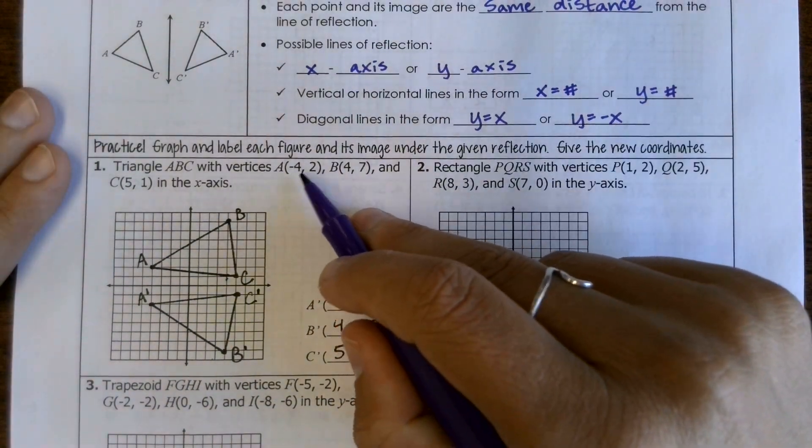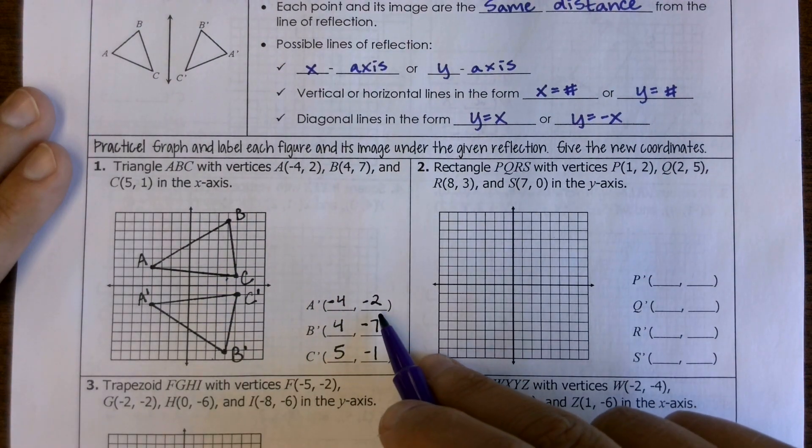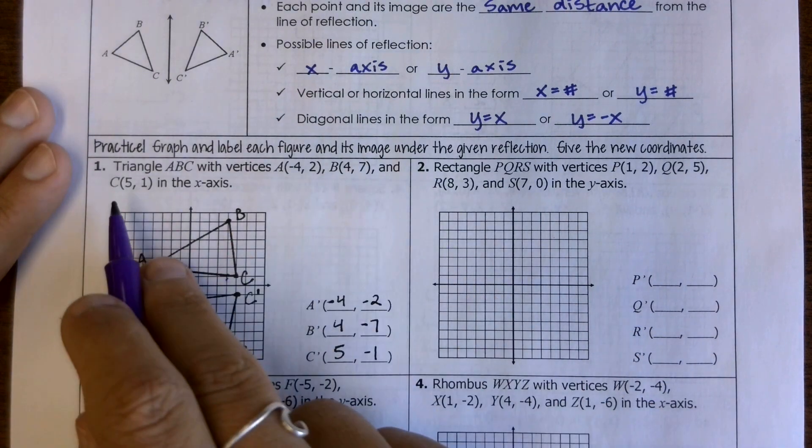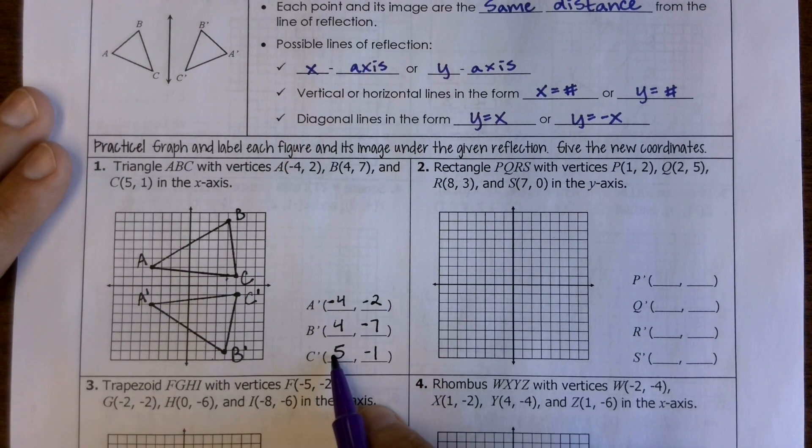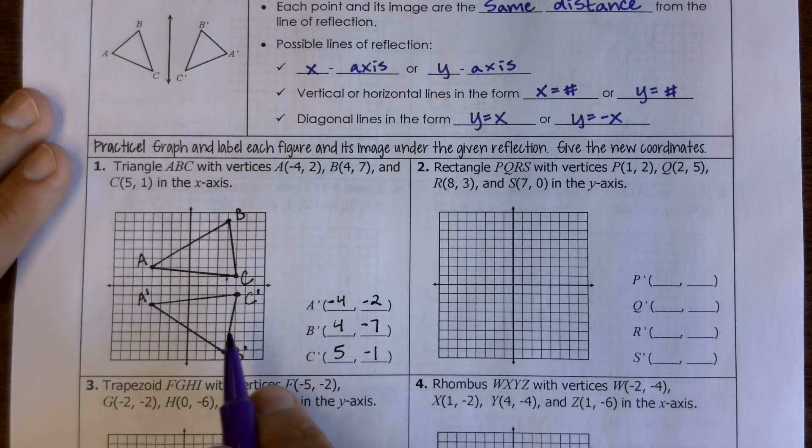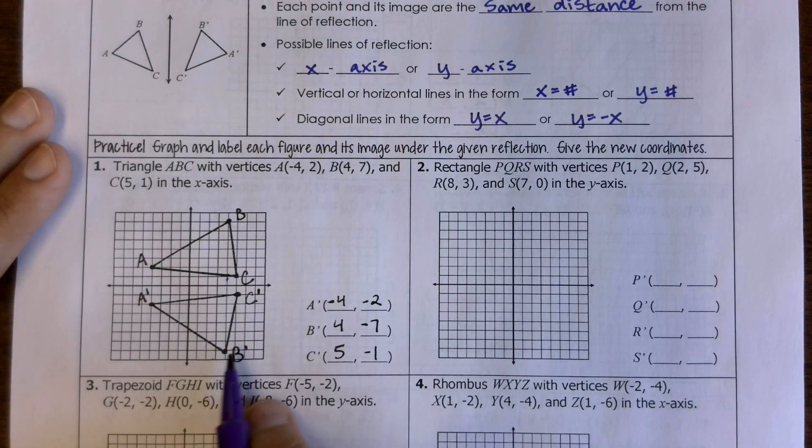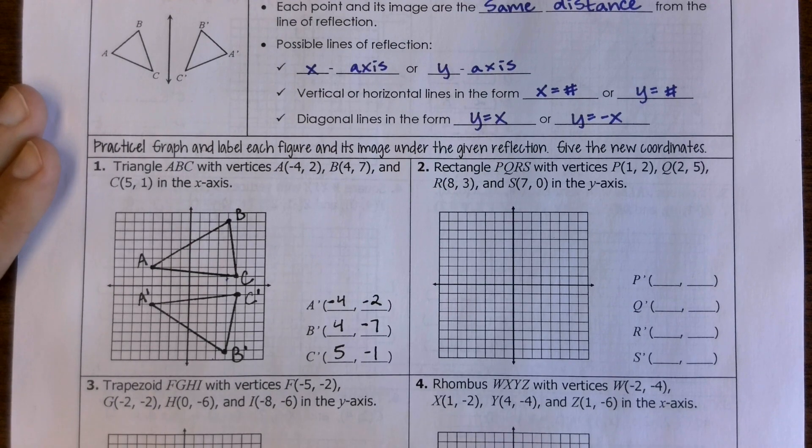If we look at the ordered pairs, my (-4, 2) ended up being (-4, -2). B ended up being (4, 7) is now (4, -7), and then C is at (5, 1), and now it's at (5, -1). So none of our x's changed because we were flipping them down and not left or right. So my x's all stayed the same, my y's just became negative, and if they were negative to begin with, they would have become positive because I would have flipped it up. So you've got the visual part of it, but then also kind of seeing some patterns of what happens with the ordered pairs.